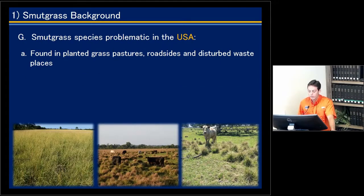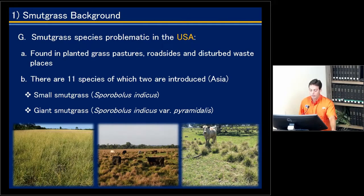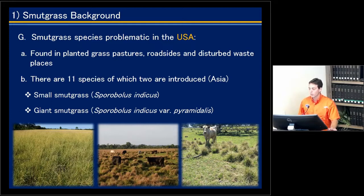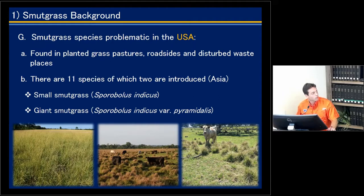Here in the United States, smudge grass is commonly found in planted grass pastures, roadsides, and disturbed waste places. We actually have 11 different species, of which two were introduced and are considered invasive: the small smudge grass and the giant smudge grass.